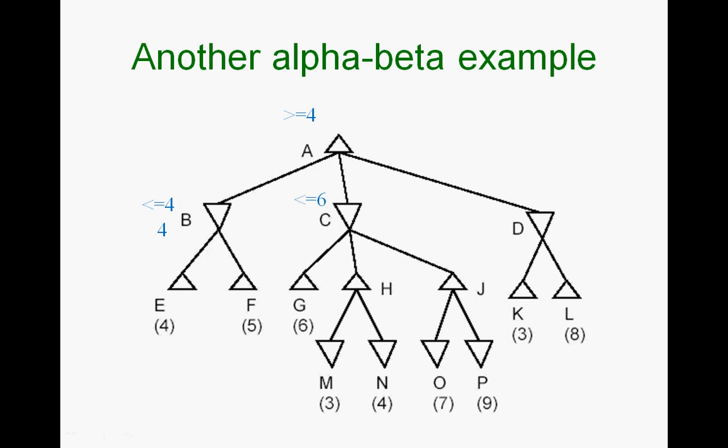You come up again from C and come down here. Remember, depth-first search comes all the way to M. M equals 3, so that means H is greater than or equal to 3. Depth-first search goes back to H, down to N.